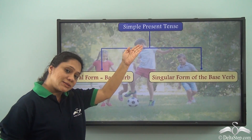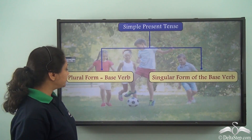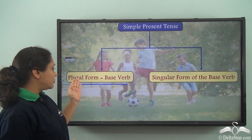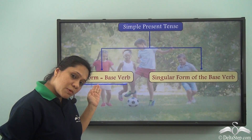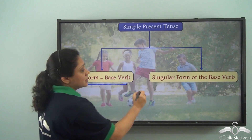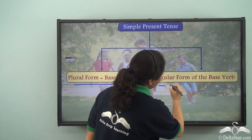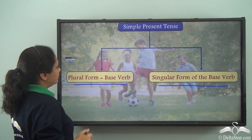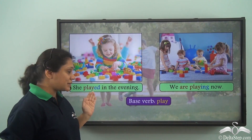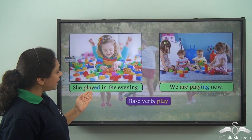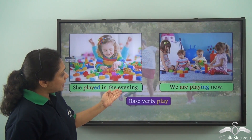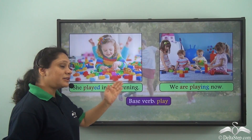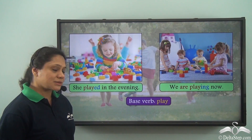So in the simple present tense we can use the base verb, which is the same as the plural form, or the singular form of the base verb. Now let us read these two examples: she played in the evening; we are playing. Let us identify the verb in these two sentences.